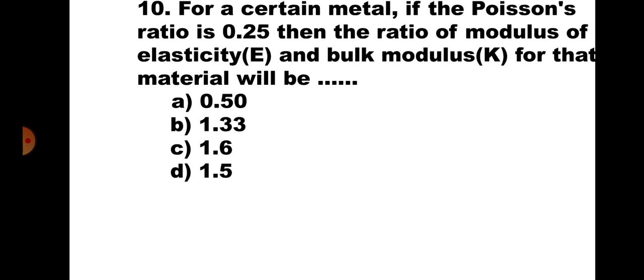Question number 10. For a certain metal, if the Poisson's ratio is 0.25, then the ratio of modulus of elasticity E to bulk modulus K will be: A. 0.5, B. 1.33, C. 1.6, D. 1.5. Using E = 3K(1 − 2μ) and substituting μ = 0.25, you get E/K = 1.5. Hence, the correct answer is D: 1.5.